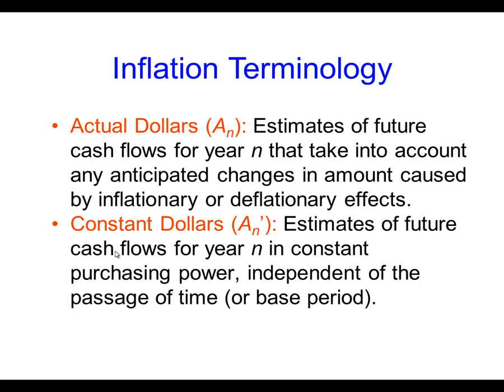When ignoring any inflation and estimating the future cash flows for N years to have a constant purchasing power, we call that constant dollars and refer to it as A prime N. While estimating future cash flows over N years taking into consideration inflation or deflation that will happen over these years is called actual dollars, or A_N.